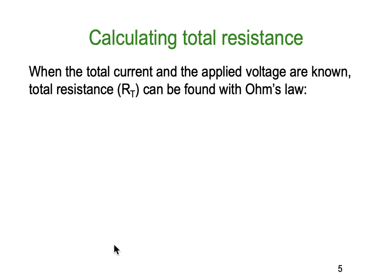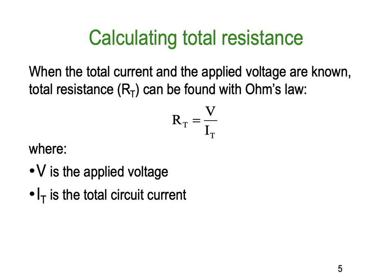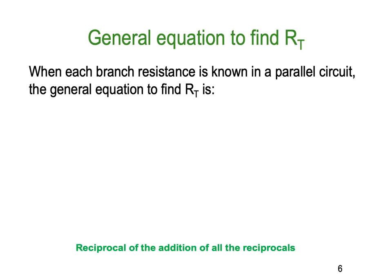So how do we go about calculating total resistance? When total resistance and current is applied and the voltages are known, the total resistance RT can be found with the Ohm's law formula. As long as we know what the voltage applied and we know what the current total is, then we can work out what the resistance total is. V is the voltage, the applied voltage. I is the total current in the circuit. If we know those two things, then simple Ohm's law, V on I, equals R.